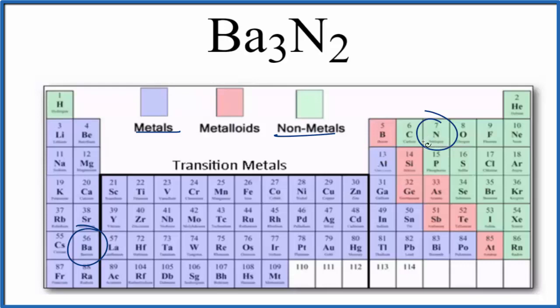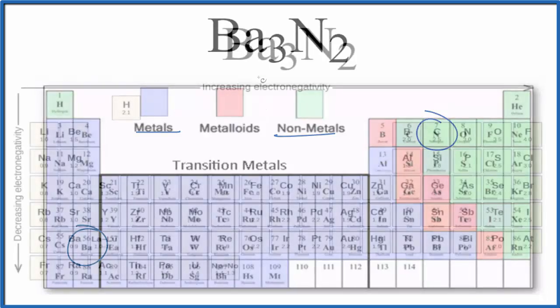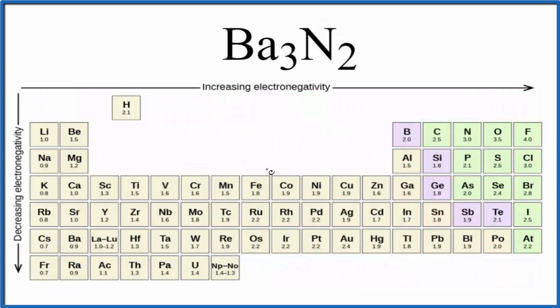Usually when we have a metal and a nonmetal, that's going to be an ionic compound. But we can also check the difference in electronegativity to see if that's the case. So again we find barium, that's over here at 0.9, and nitrogen at 3.0.